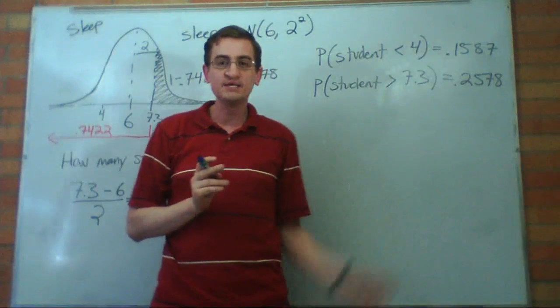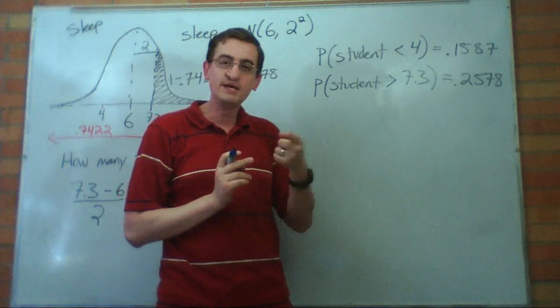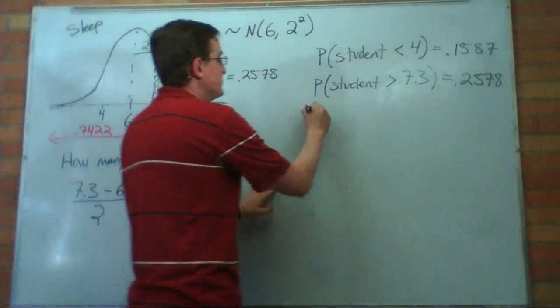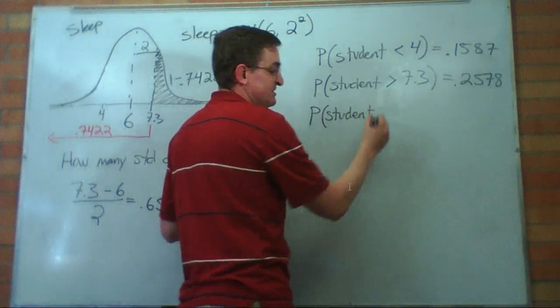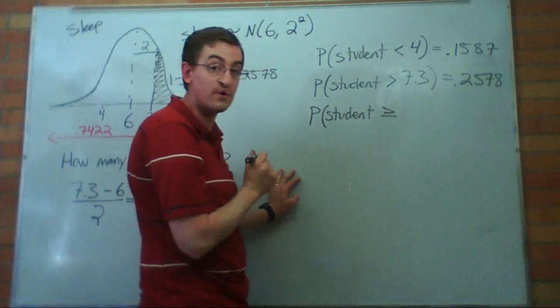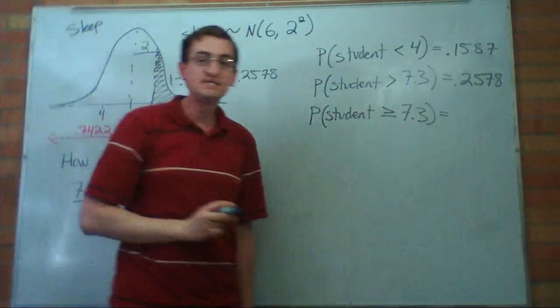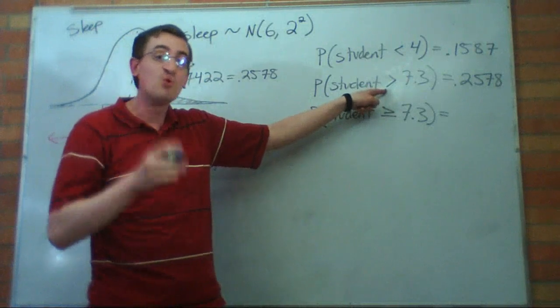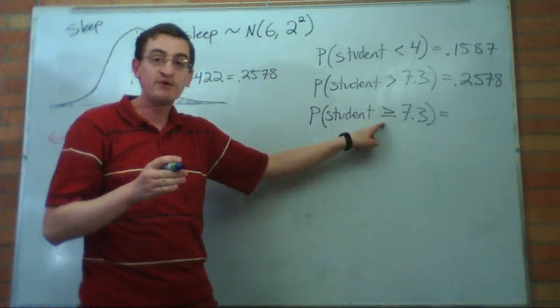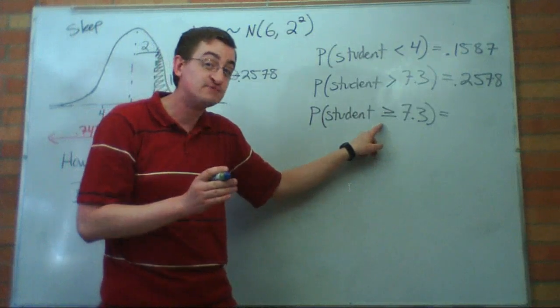So although I feel like I got a lot of sleep, 25 percent of the students got more sleep than I did. Let's ask a related question that's very similar. What's the probability that a student is going to get as much sleep or more, which is 7.3? What's different from what we did before? Before, we said, what's the probability a student gets more sleep than me? Now I'm saying, what's the probability they get more sleep or exactly the same amount of sleep as me?